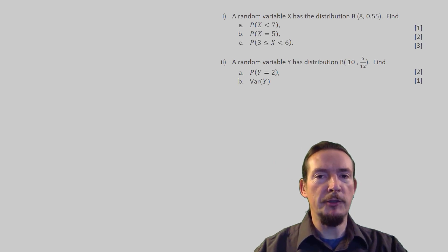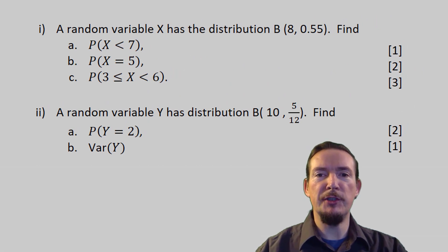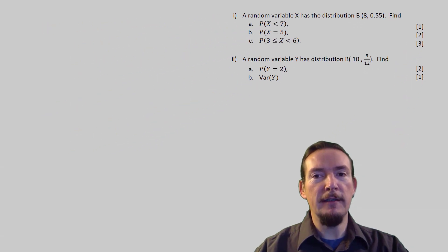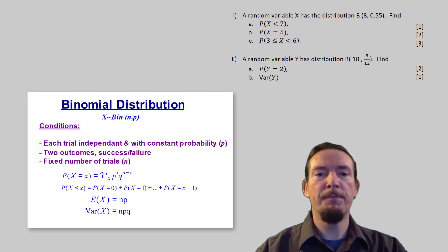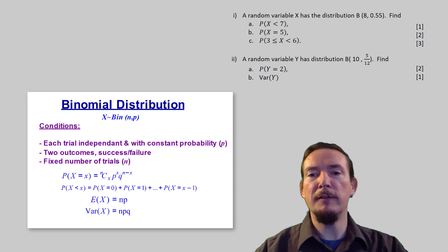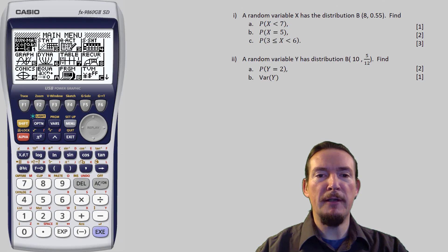So, over to the exam question. This one is very straightforward. There is no context for us to interpret, and it tells us up front that it's a binomial distribution. Often the examiners are less kind, and you'll need to work out yourself that the binomial distribution needs to be applied. In these cases, you're looking for scenarios involving a fixed number of trials and an equal chance of success for each trial. But nothing like that to worry about here. We just need to tap the parameters into the calculator and write down the results.